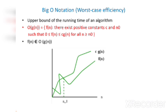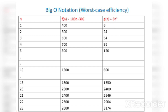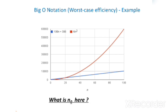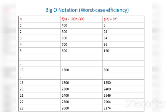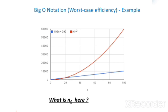Here is an example for Big O notation. When n increases from 1 to 23, the function f(n) is given by 100n + 300 and g(n) is equal to 6n². As n increases, f(n) increases as per the formula and g(n) also increases as per the formula. The graph illustrates f(n) = 100n + 300 and g(n) = n².